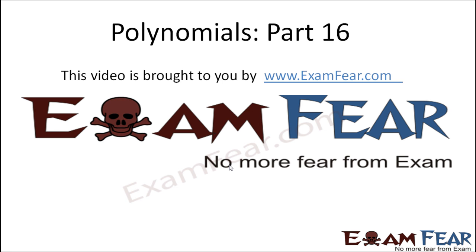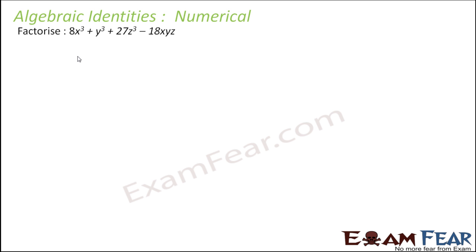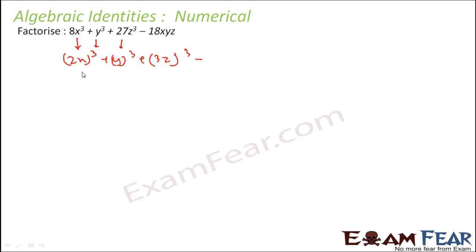Hello friends, this video on polynomials part 16 is brought to you by examfia.com — no more fear from exam. We have to factorize this expression: (2x)³ + y³ + (3z)³ minus 2×3 which is 6, 6×3 which is 18, that is 3 × 2x × y × 3z. This is what is written.